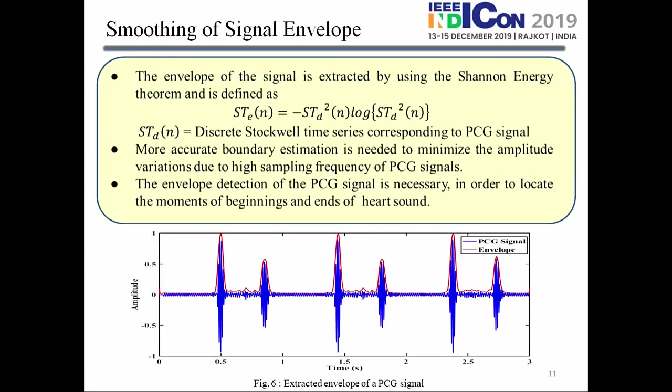For the smoothing step, we apply the Shannon energy theorem to smooth the envelopes, as it is required to minimize amplitude variation. We then use envelope detection techniques, and from the envelope we perform boundary detection to locate the beginning and end moments of the heart sounds.